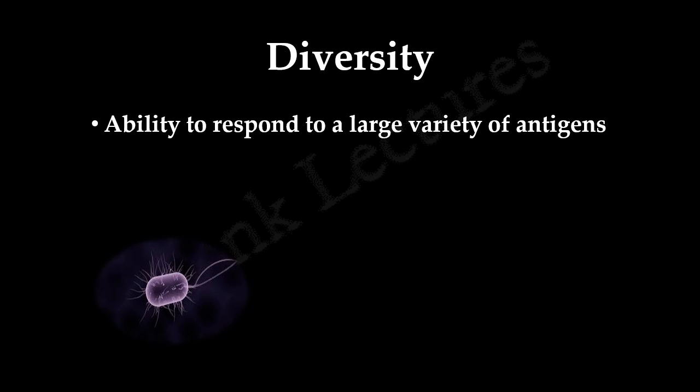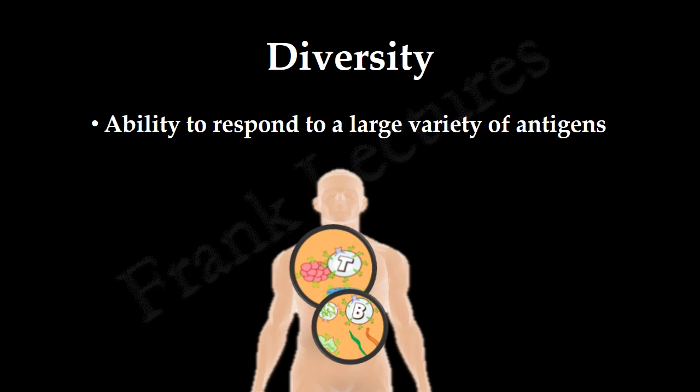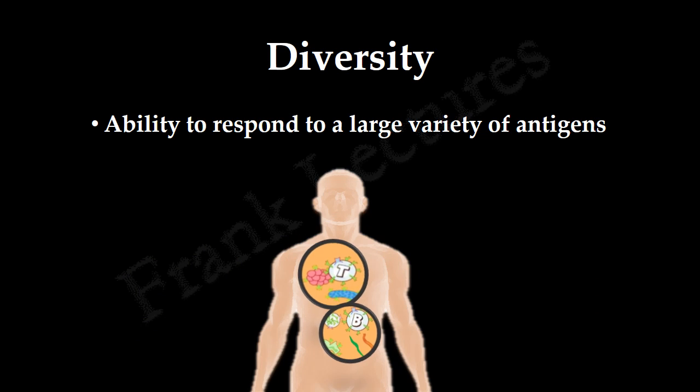The second characteristic of adaptive immunity is diversity. Diversity refers to the ability to respond to a large variety of antigens. Pathogens encountered by our body exist in various forms such as bacteria, viruses, fungi, protists, and multicellular parasites. Each of these has many different strains with multiple surface features, and the adaptive immune system is capable of recognizing and responding to these pathogens specifically.